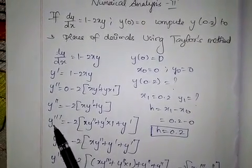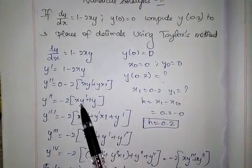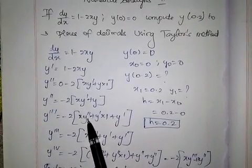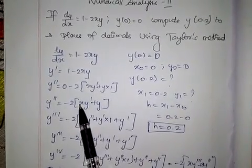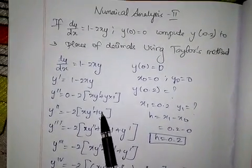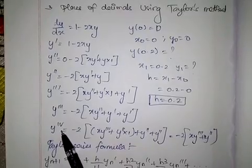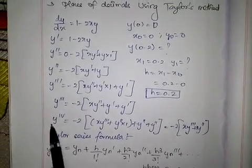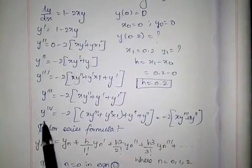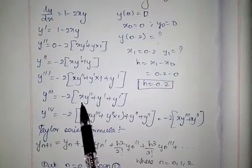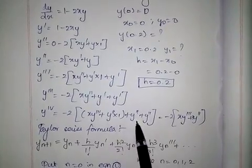We are finding y''' from y''. That is minus 2 times, since xy is in uv form, xy'' plus by keeping y' as it is, x differentiated gives 1 times y'. Then we find y'''', the 4th derivative, which is enough for a 5 mark question. Minus 2, differentiating in uv form, uv' plus vu', plus y' differentiated gives y''.